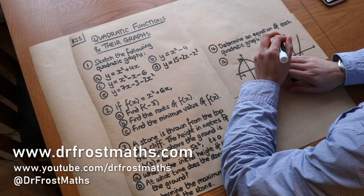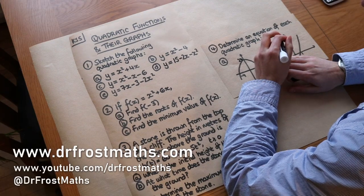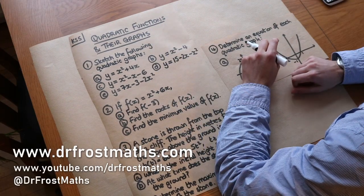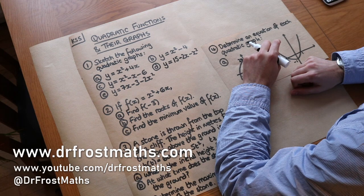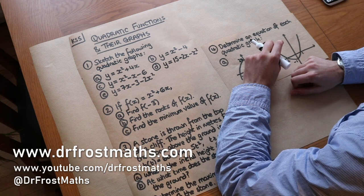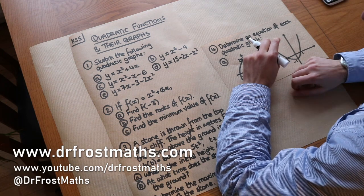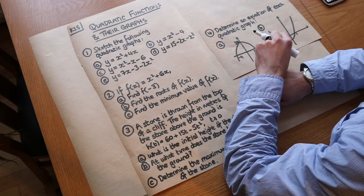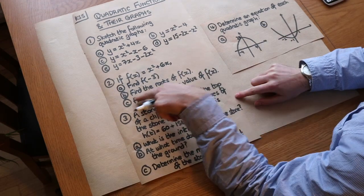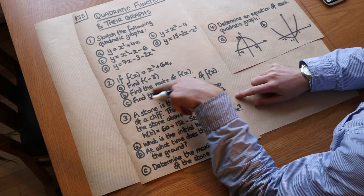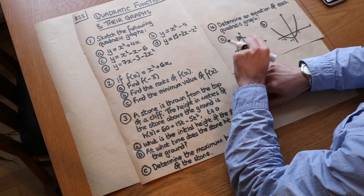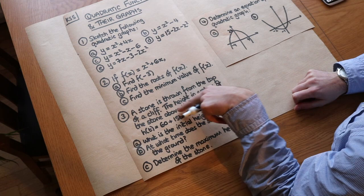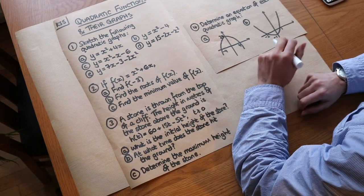Hello and welcome to this Dodd-Trost Maths video on Key Stage 5 Quadratic Functions and their Graphs. In this video we're going to be exploring how we can sketch quadratic graphs, we'll reason about what we mean by roots and how we find the minimum value, and we'll look at a modelling example as well.